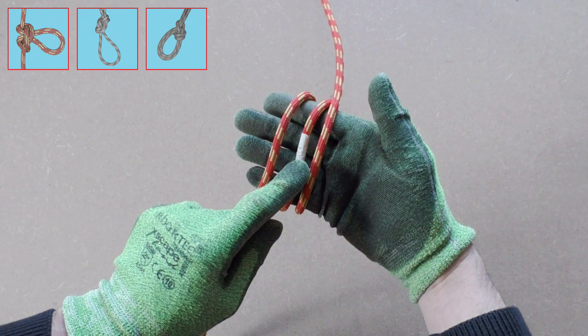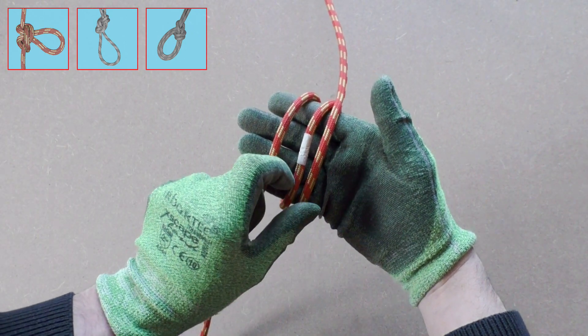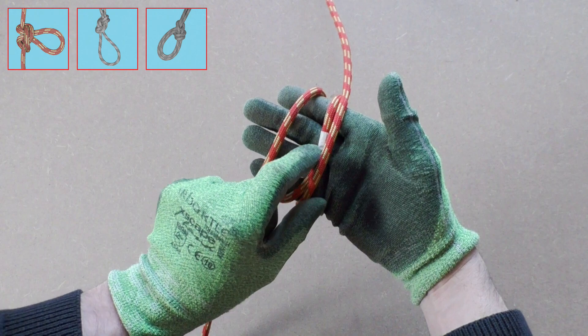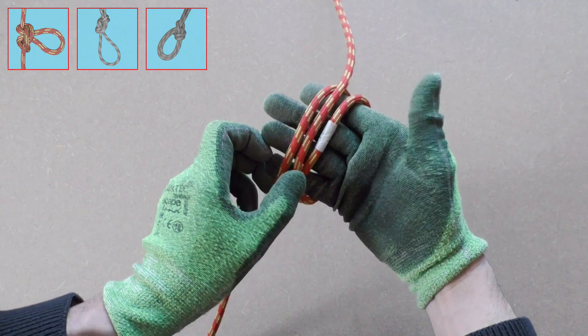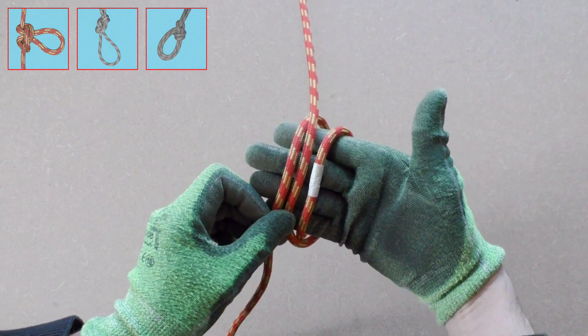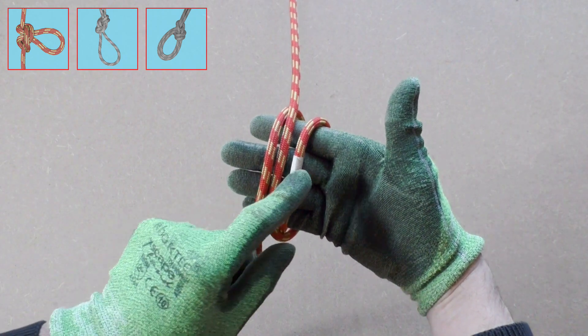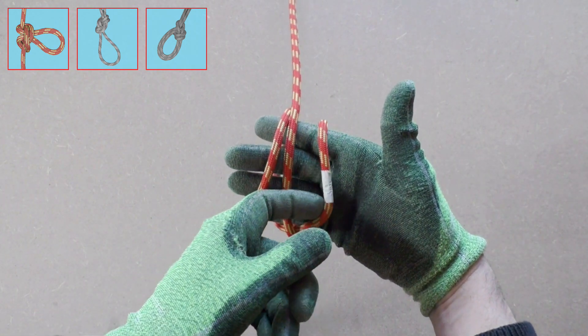The middle wrap is important when tying the alpine butterfly knot so we have marked it. We take the marked loop and bring it to the outside of the three loops by going underneath the loop that is on the right of the marked loop.